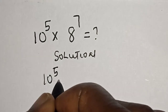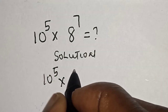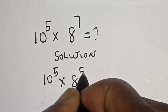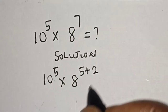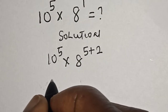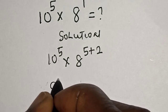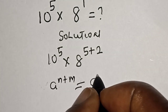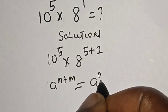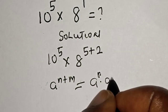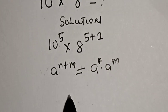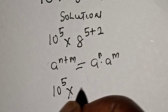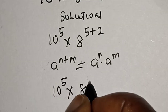Solution: 10 raised to power 5 multiplied by 8 raised to power 7. This can be written as 8 raised to power 5 plus 2. Take note of this rule: a raised to power n plus m is equal to a raised to power n multiplied by a raised to power m.